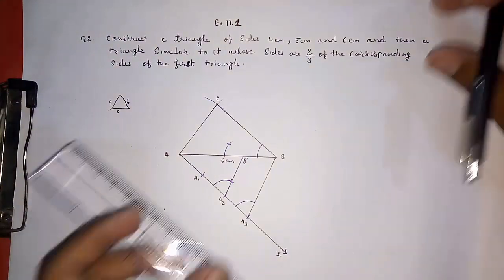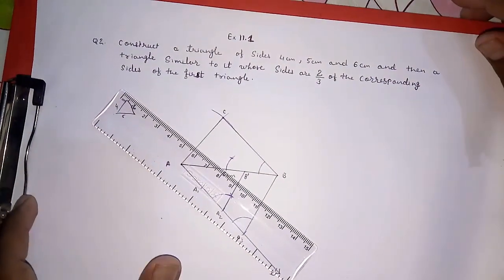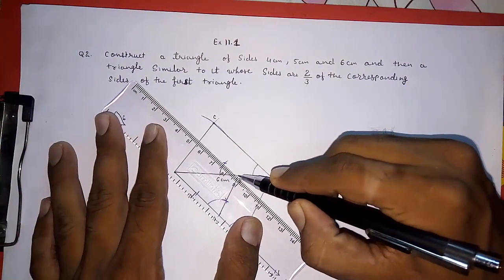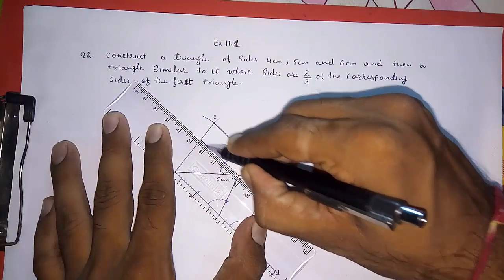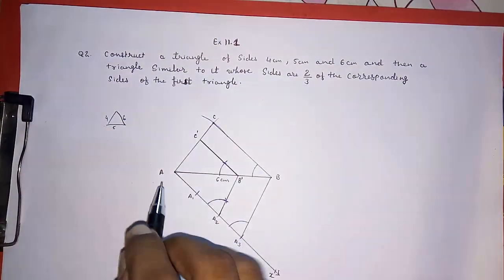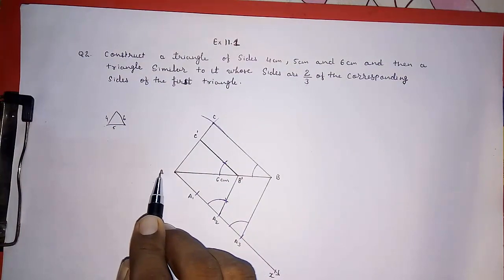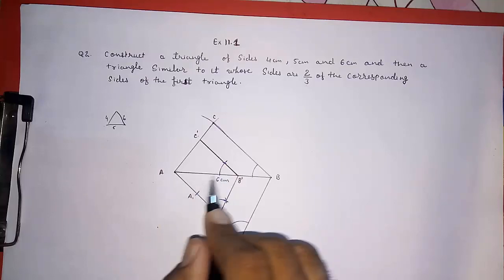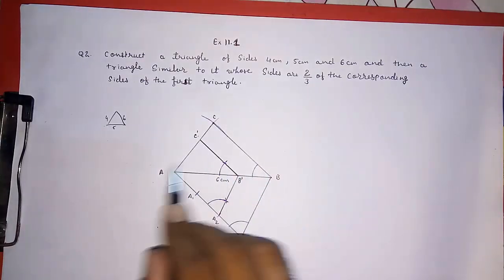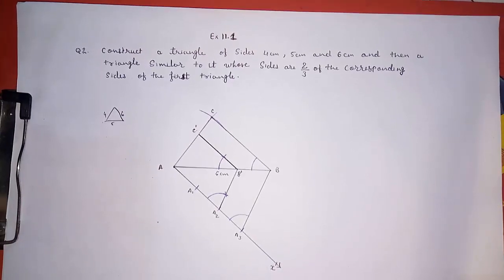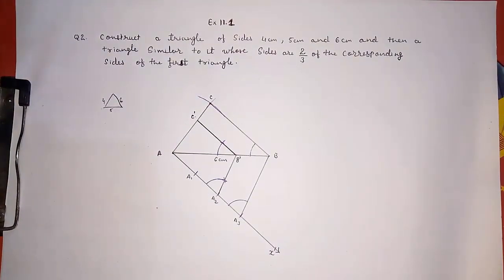Now we draw the line parallel to BC from B dash, and we get point C dash. So triangle AB dash C dash is the required similar triangle, which is 2/3 of triangle ABC. Thank you so much for watching. If you like it, please subscribe to my channel so that I can bring more such videos for you.